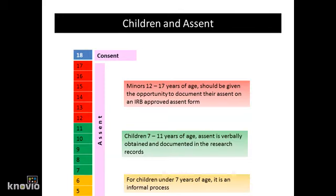So what is assent? Essentially, as children become older, they should be provided more and more information about the research, and they should at least agree to participate. For children under 7, they may be given very limited information about the research. For children between 7 and 11 years of age, they may be given an increasing amount of information about the research, for example the risks and the benefits. And for minors between the ages of 12 and 17, they should be given an increasing amount of information to provide their assent.